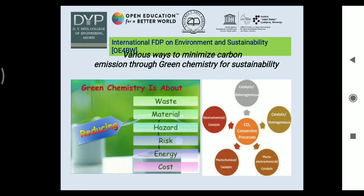How can it minimize carbon footprint? Simply by CO2 conversion processes — converting CO2 into other products — through different catalytic processes like catalytic heterogeneous, catalytic homogeneous, photoelectrical, and electrochemical catalytic processes.